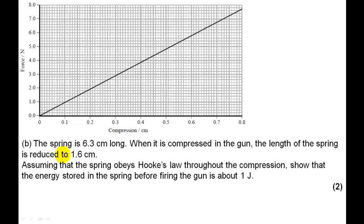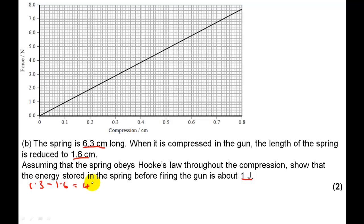Now we're asked to show that the energy stored in the spring before firing is about one joule. We're told the spring is 6.3 centimeters long before compression and reduces to 1.6 centimeters after compression. So the compression is 6.3 minus 1.6, which is 4.7 centimeters, or 0.047 meters — we must work in meters to get the correct answer.